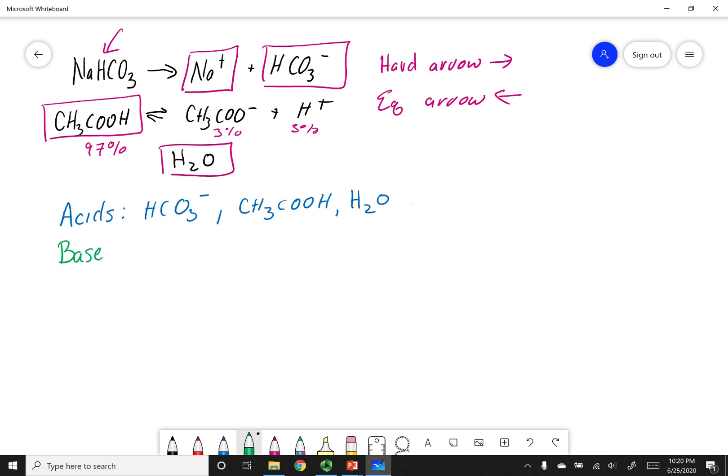Now, let's go ahead and do our bases. Remember, our bases are things that can accept protons. So again, sodium is a neutral species. It's neither basic or acidic. But bicarbonate, this one can accept a proton and become H2CO3. So that's a base. And lastly, water can be a base, H2O. So now what I've listed are all my acids and all my bases.